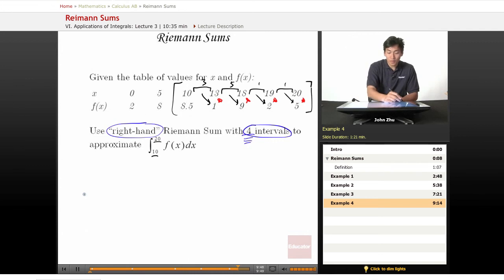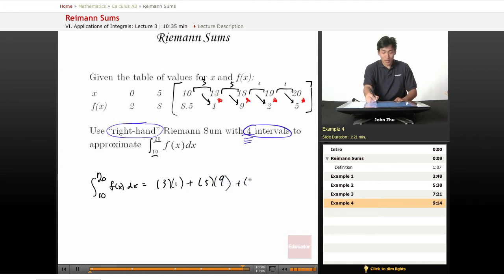So the integral from 10 to 20 of f(x)dx equals—just go ahead and plug in: 3 times 1 plus 5 times 9 plus 1 times 2 plus 1 times 5. And all together, we get 55.